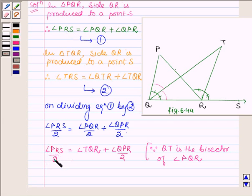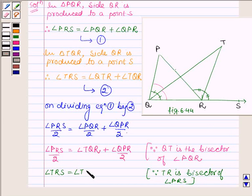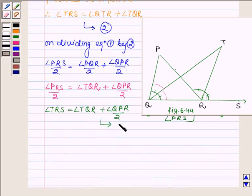Now angle PQR upon 2 is equal to angle TQR since QT is the bisector of angle PQR. Similarly, angle PRS upon 2 can be written as angle TRS since TR is the bisector of angle PRS. This gives us angle TRS equals angle TQR plus angle QPR upon 2. Let this be equation number 3.